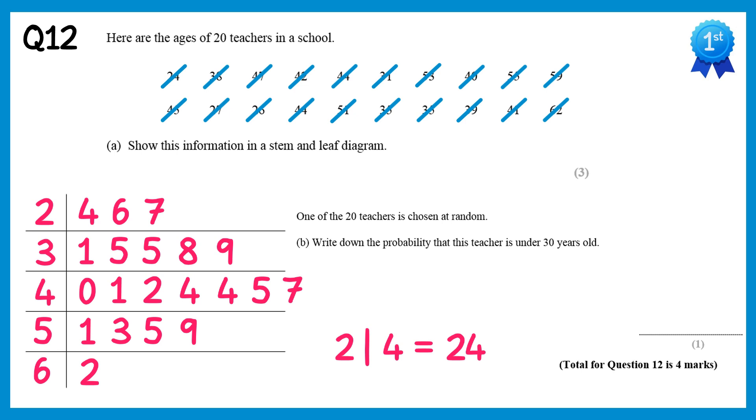This is the completed stem and leaf diagram. For the next part of the question we need to find the probability that the teacher is under 30 years old. This is only those in the top line here because they're in their 20s. There are 3 of those, and 20 people altogether, so the probability is 3 over 20.